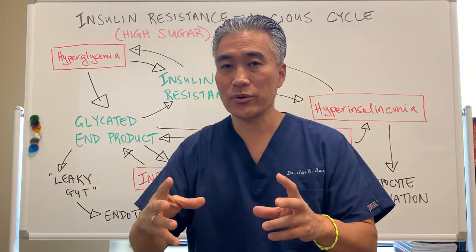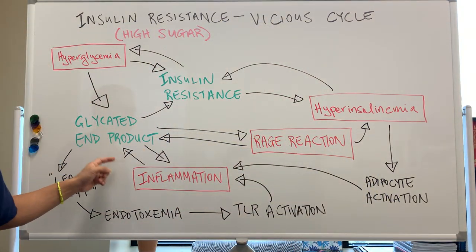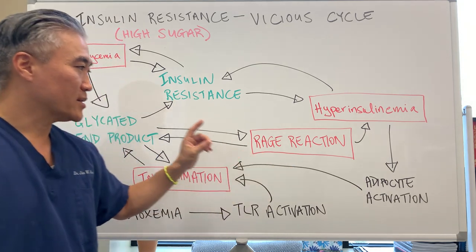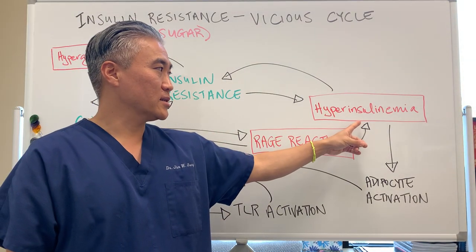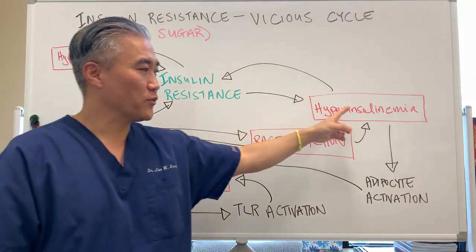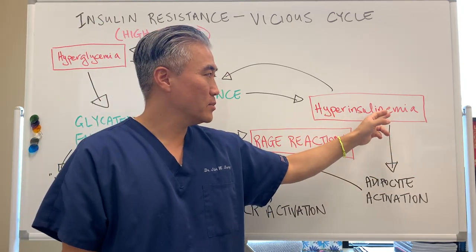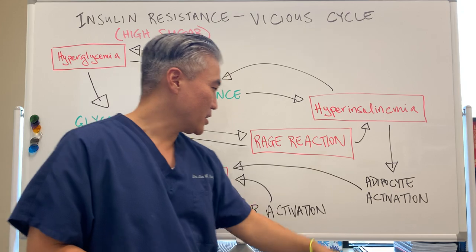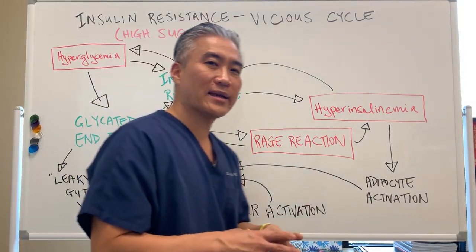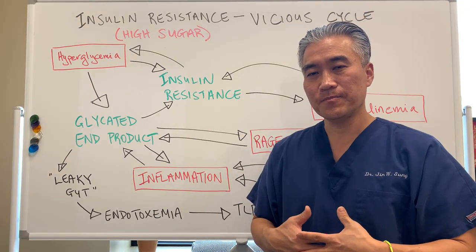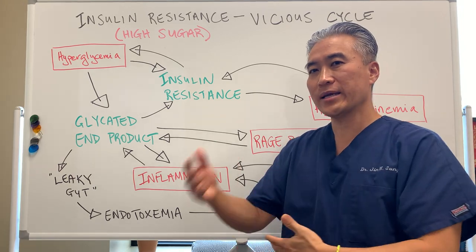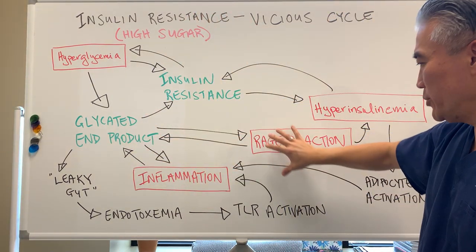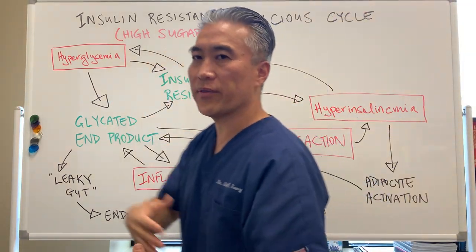There are also receptors that bind to these glycated end products called RAGE — receptors for advanced glycated end products. Once that is activated, you have increased insulin, which feeds back to insulin resistance, going back and forth. And when you have hyperinsulinemia — high insulin — you can activate fat cells, or adipocytes. When you activate fat cells, what does it do? It creates more inflammation. So when you look at this cycle, there is a back-and-forth mechanism where each loop creates another, and the other creates a problem back. This is the vicious cycle of high sugar, inflammation, immune response, and high insulin going back and forth.